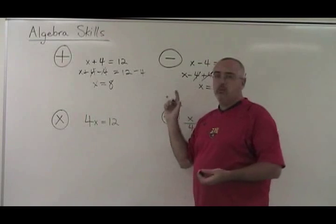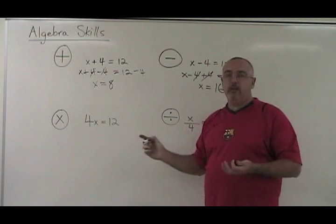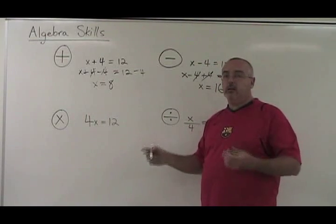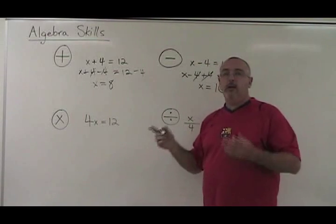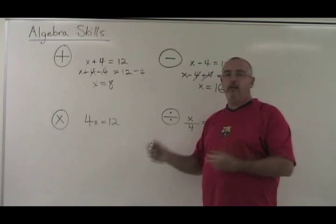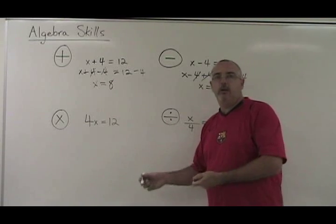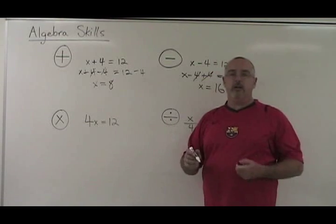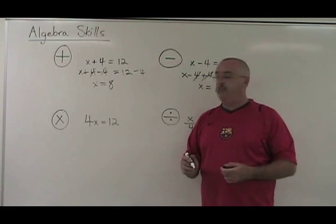These cancel and we end up with X equals 12 plus 4, which is 16. We have our answer. The adding-as-a-fraction rules are pretty much the same thing — you just do the opposite in order to eliminate the number, and that results in the number going to the other side of the equal sign.